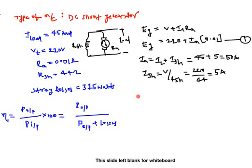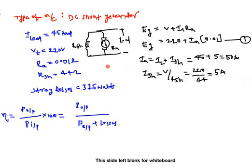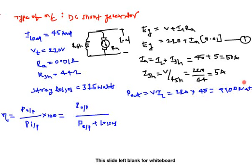Now let's find the output power. Output power P_output = V × IL = 220 × 45 = 9900 watts.